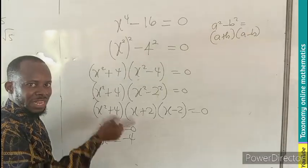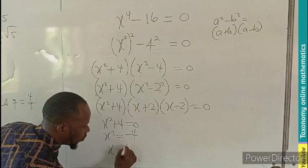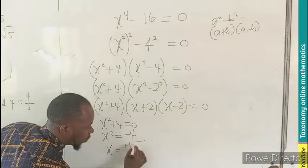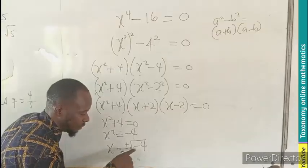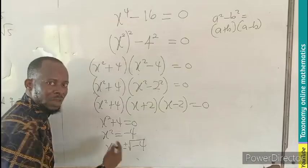Since we are looking for x, we find the square root of both sides. Meaning x will be equal to plus or minus the root of negative 4. And if we have a square root of a negative number, it gives you i.